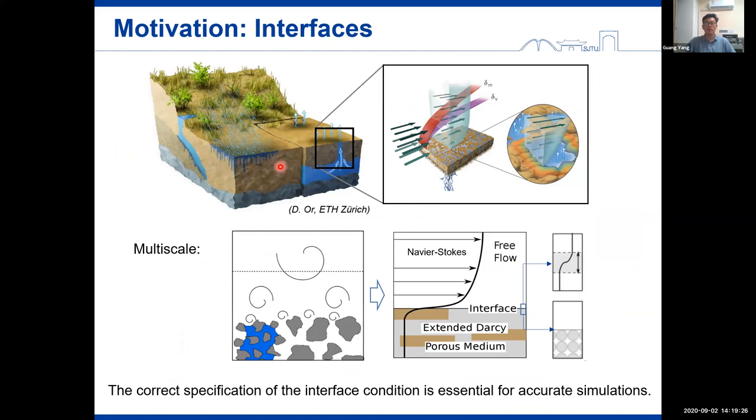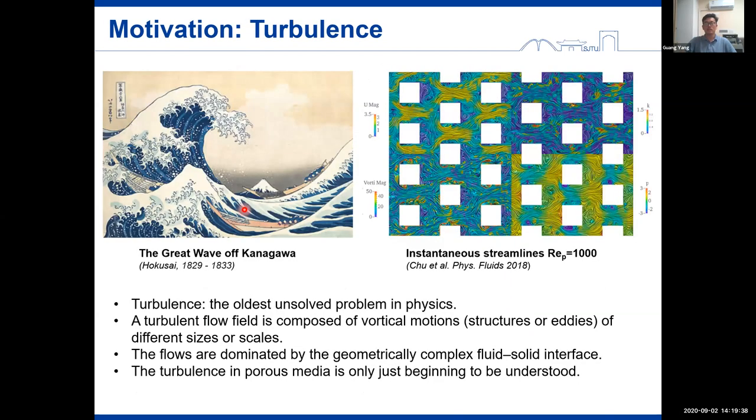So the modeling from the macro scale is considered the most effective way to understand such interface driven processes. The correct use of the interface condition is still very essential and also challenging due to the complexity of the interactions. Therefore, the understanding of the flow physics in micro scale is a prerequisite to build or improve interface conditions.